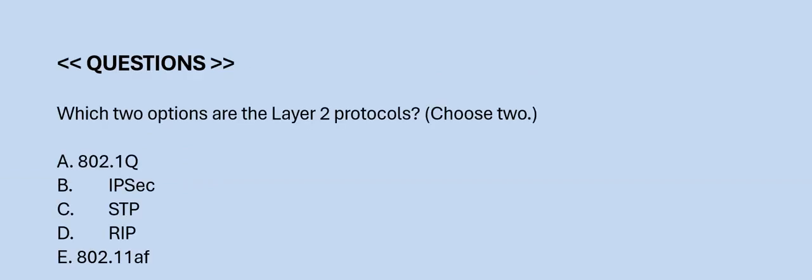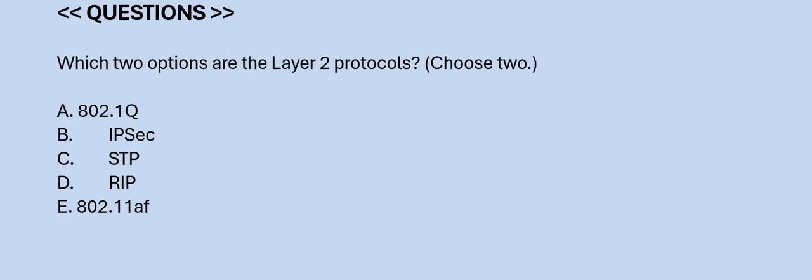Next question: Which two options are the layer 2 protocols? Choose two. Option A: 802.1Q. Option B: IPsec. Option C: STP. Option D: RIP. Option E: 802.11AF. The correct answers are Option A and C.